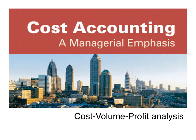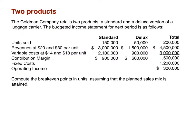Up until this point we've been talking about break-even analysis using just one product. Most companies sell more than one product, so we need to think about break-even with more than one product. Here we have the Goldman Company — they retail two products: a standard and a deluxe version of a luggage carrier. The budgeted income statement for the next period shows units sold, revenues, variable costs, contribution margin, fixed costs, and operating income for both products.